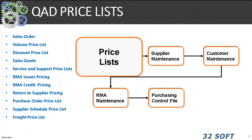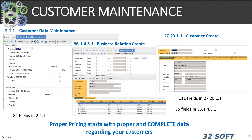There are a whole host of processes and functions in QAD that range from sales order price list, volume price list, customer schedule pricing, sales quotes, RMA issue, RMA credits, purchase order pricing, service pricing, and freight price list — all available to us in QAD. Remember, your primary target of pricing is your customer.